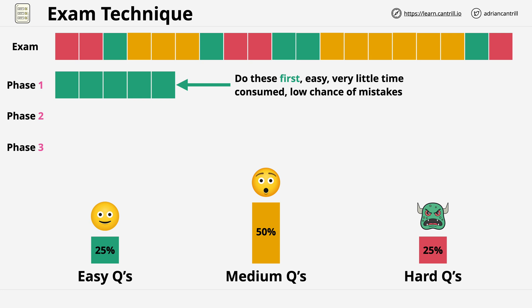The reason I do these phase one questions first is that they're easy, they take very little time, and because you know the subject so well, you have a very low chance of making a mistake. So once you've finished all of these easy questions — the phase one questions — what you're left with is the medium or yellow questions, and the hard or red questions.